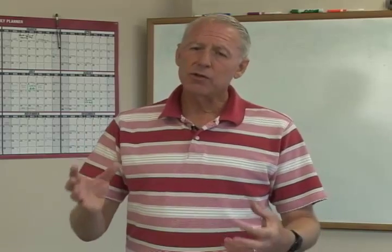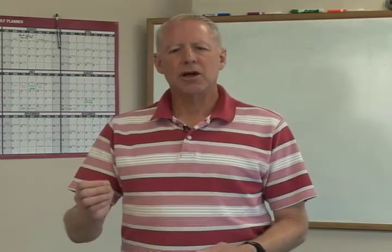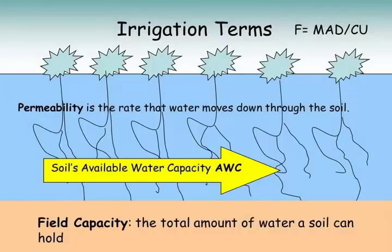Soil texture is also important because it affects the rapidity of the intake rate of the soil at the surface when we irrigate, and also the permeability as the water moves through the soil.